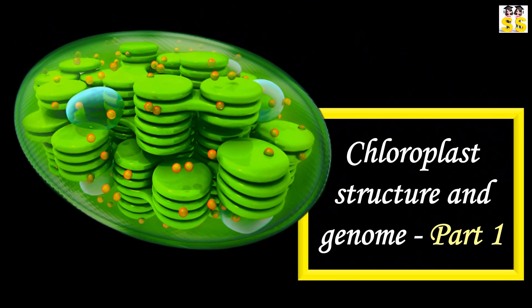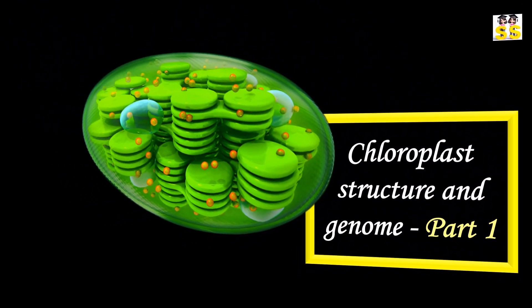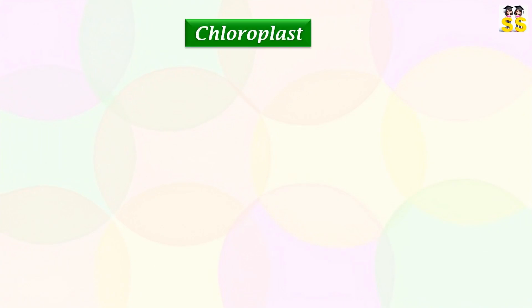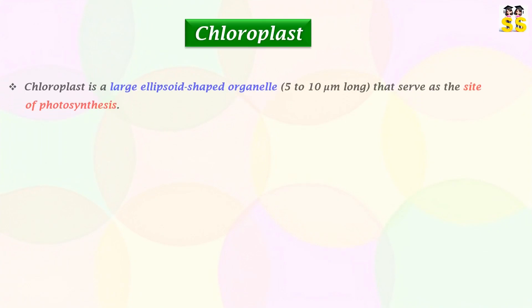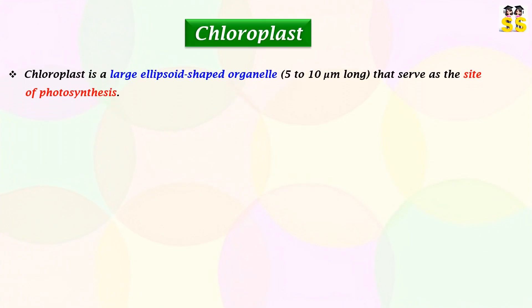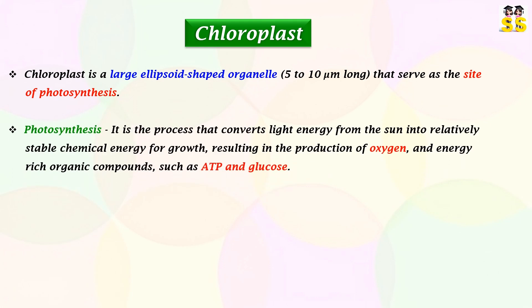Chloroplast Structure and Genome. Chloroplast is a large ellipsoid-shaped organelle that serves as the site of photosynthesis. Photosynthesis is the process by which solar energy is converted into chemical energy, resulting in the production of oxygen, ADP, and glucose.